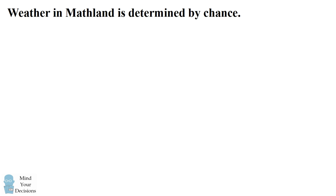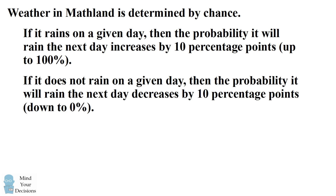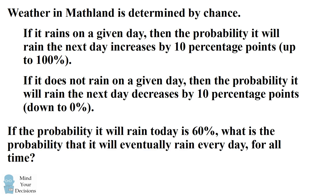Hey, this is Presh Talwalkar. Weather in math land is determined by chance. If it rains on a given day, the probability it will rain the next day increases by 10 percentage points up to 100%. If it does not rain on a given day, the probability it will rain the next day decreases by 10 percentage points down to 0%. If the probability it will rain today is 60%, what is the probability that it will eventually rain every day for all time?